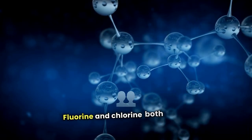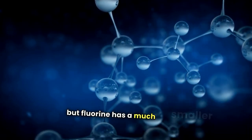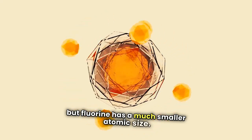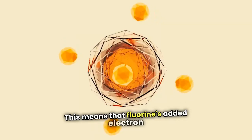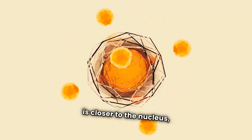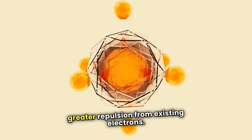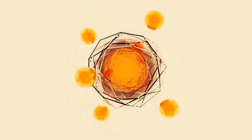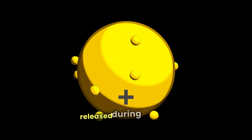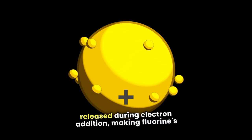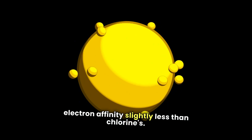Fluorine and chlorine both belong to the halogen group, but fluorine has a much smaller atomic size. This means that fluorine's added electron is closer to the nucleus, experiencing greater repulsion from existing electrons. This increased repulsion reduces the energy released during electron addition, making fluorine's electron affinity slightly less than chlorine's.